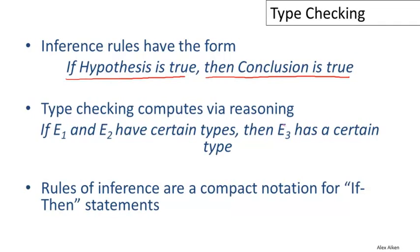In the particular case of type checking, a typical kind of reasoning is that if a couple of expressions have certain types, then some other expression is guaranteed to have a certain type. Clearly the type checking statement is an example of an inference rule, and inference rule notation is just a compact way of encoding these kinds of if-then statements.